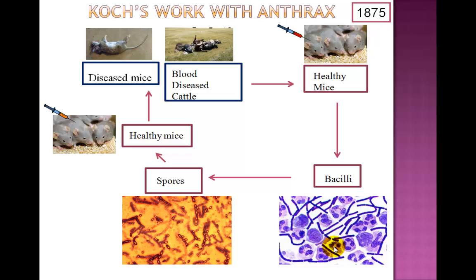To prove that this bacillus is the causative agent of anthrax, Robert Koch took the blood from diseased sheep and cattle and injected it into healthy mice. He then noticed that the mice had the same symptoms as the cattle, and when he performed autopsies he found similar signs of pathology in the mice. From the blood of these mice he isolated a few rod-shaped bacterial cells that we call bacilli, as shown here in dark blue.